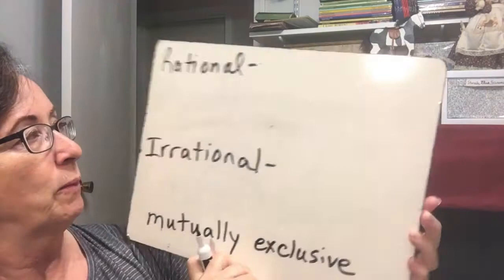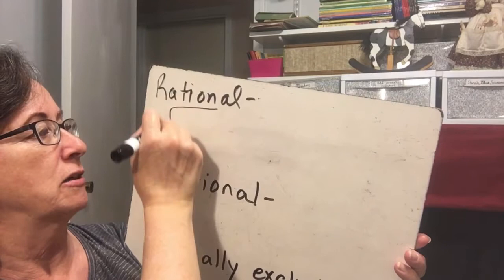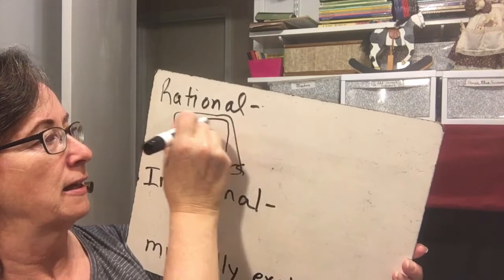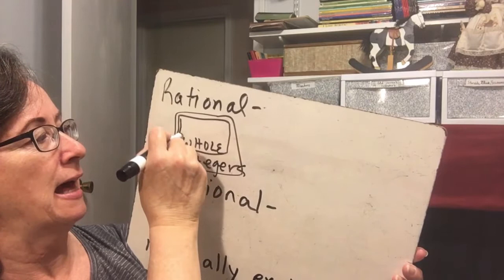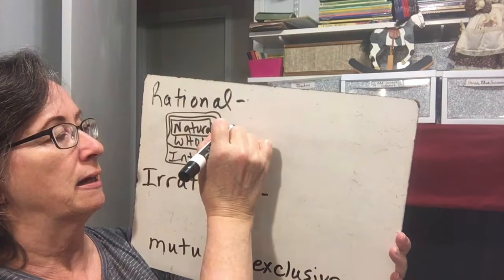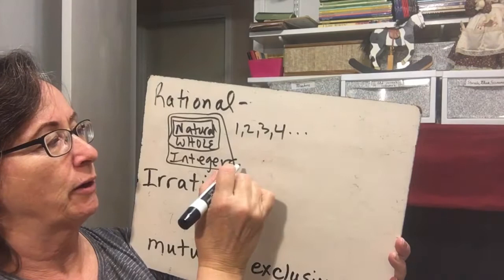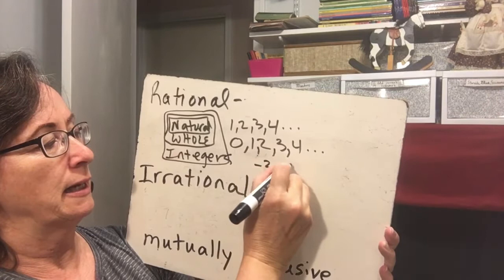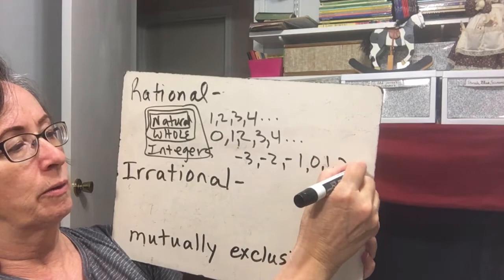Let's look at the board showing rational and irrational. Inside the rational numbers is the set of integers, and inside the integers is the set of whole numbers, and inside the whole numbers is the set of natural numbers. Natural numbers are {1, 2, 3, 4, ...}, whole numbers are {0, 1, 2, 3, 4, ...}, and integers are {..., -3, -2, -1, 0, 1, 2, 3, ...} — continuing forever on both sides. These are specific sets you must recognize.